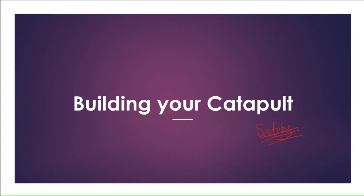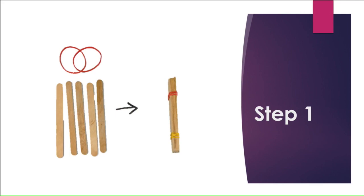Okay, let's get on with building our catapult. First of all, take five paddle pop sticks out of your bags and two rubber bands and join them together like this so that they are tightly bound at each end.